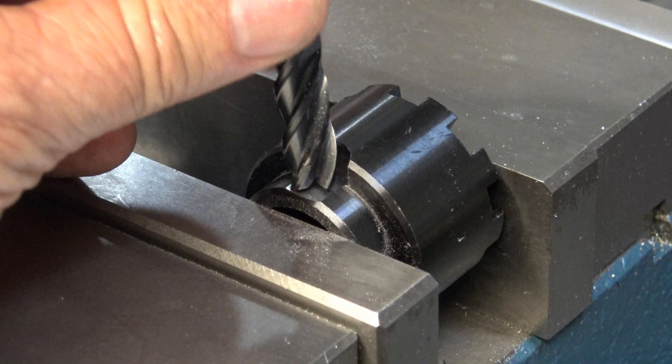I had already milled this pocket in the drive for the hand crank before I decided to make this video. But I used a 3/8 end mill to mill out the pocket.